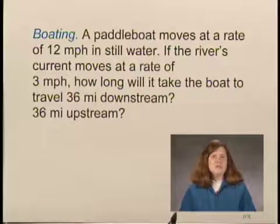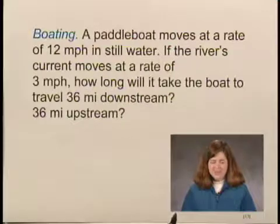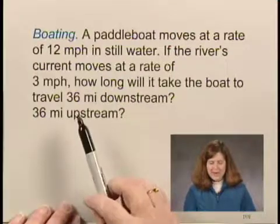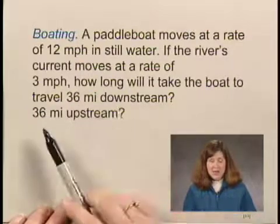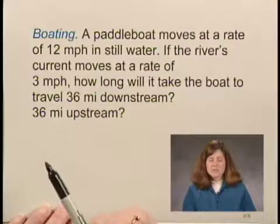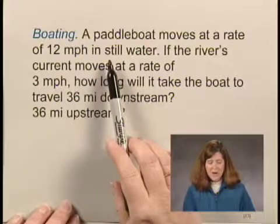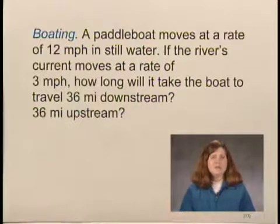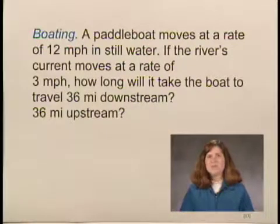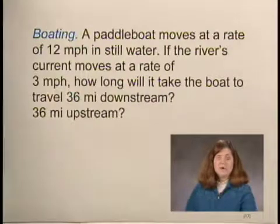Our first step is to familiarize ourselves with the problem. The first thing I notice is there are two questions to answer — very important to notice we're asked for two answers: how long it will take the boat to travel 36 miles downstream, and how long to travel 36 miles upstream. The paddle boat's rate is given in still water and it's going to be in a current. If you don't remember how a boat's rate in still water relates to its rate in a river with current, you might need to look that up — that would also be part of the familiarize step.